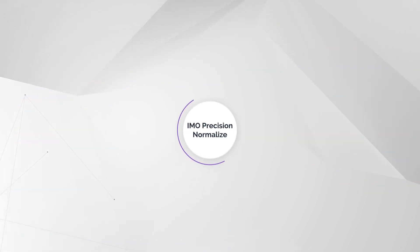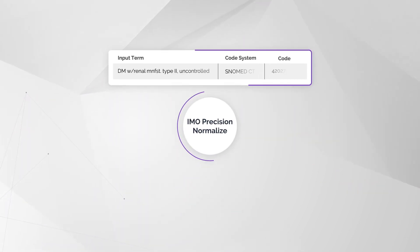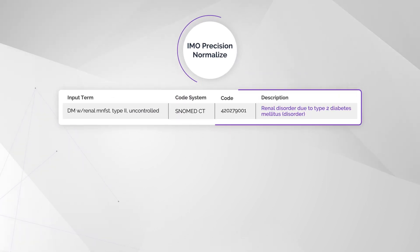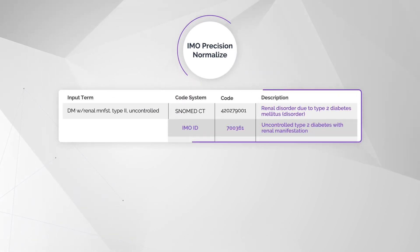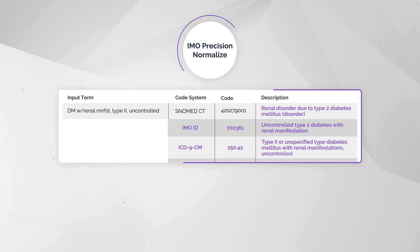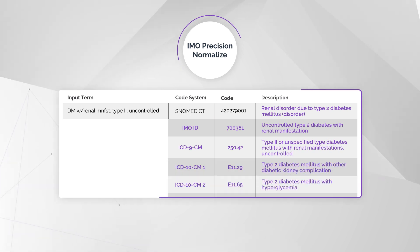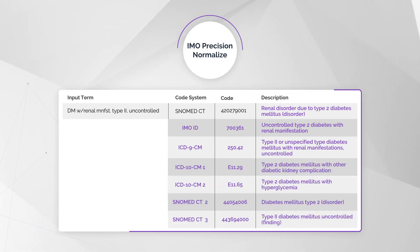IMO Precision Normalize, a powerful data standardization solution, can help address data quality issues, filling in critical gaps with more meaningful, appropriately coded data without the need for cumbersome manual fixes.